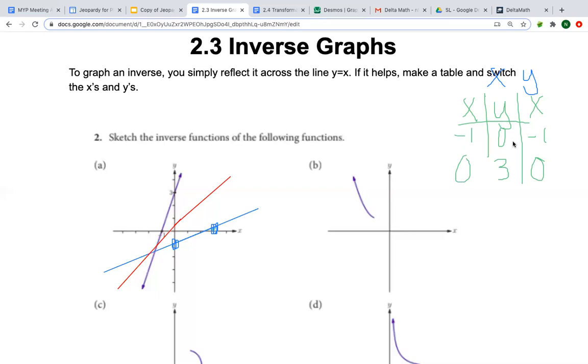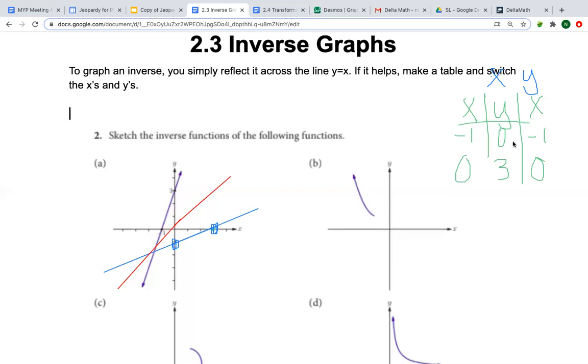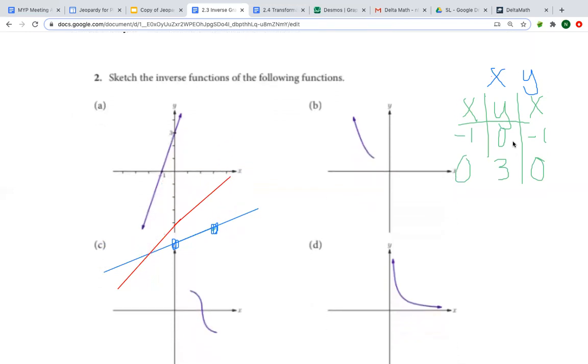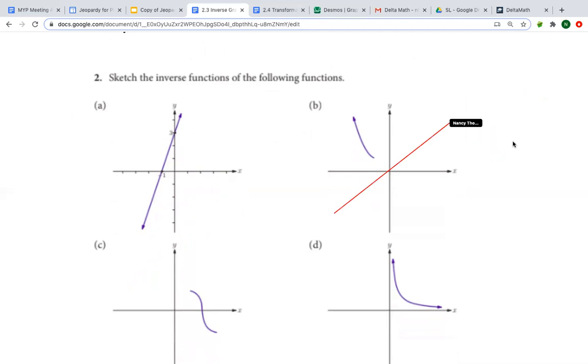So now the same concept works. For this next example, we don't have numbers, but we should be able to follow the same concept. So let's redraw this red line. This is our y equals x line that we're reflecting over. You can also think of this as the fold.